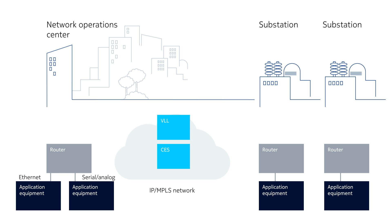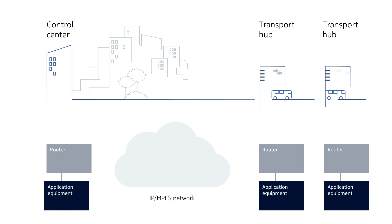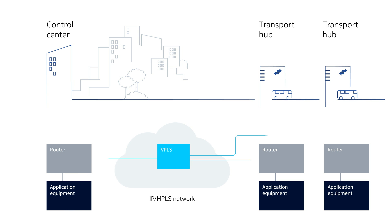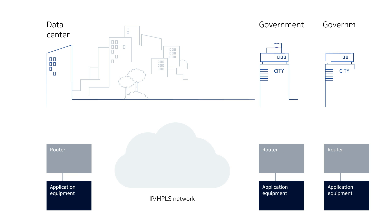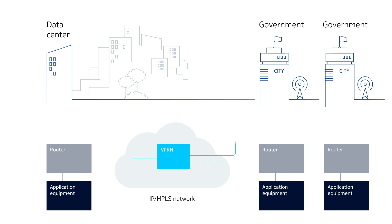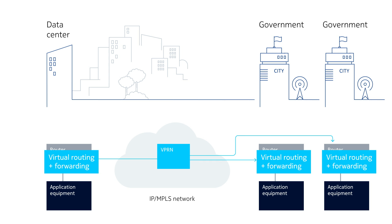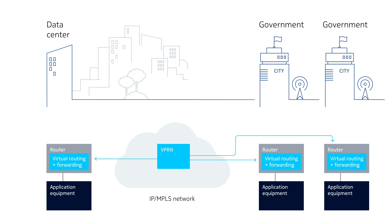Services such as virtual leased lines and circuit emulation, layer 2 multipoint virtual private LAN services — VPLS — and layer 3 virtual private routed network services — VPRN.